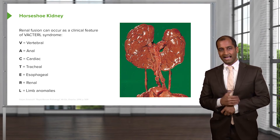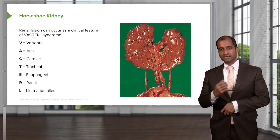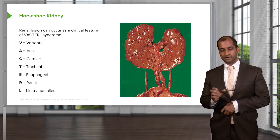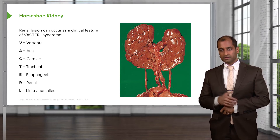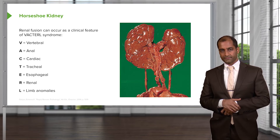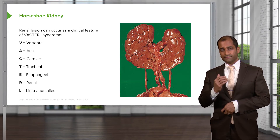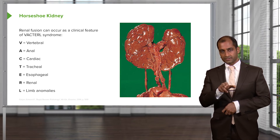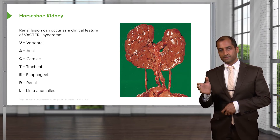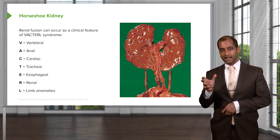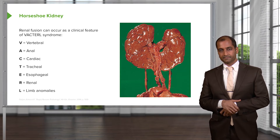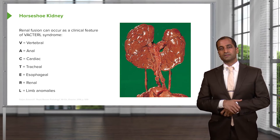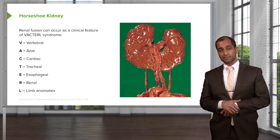VACTERL: Vertebral anomaly, Anal issues, Cardiac issues, Tracheal-Esophageal fistula — in gastroenterology, we've talked about the most common type of tracheal-esophageal fistula, which has proximal esophageal atresia and a distal esophageal fistula, accounting for 85–90% of patients. Here's the renal abnormality that you find with VACTERL.